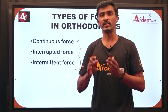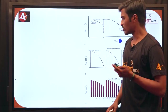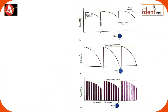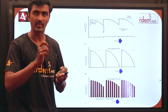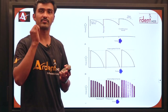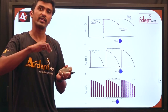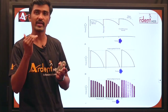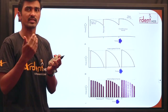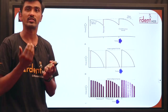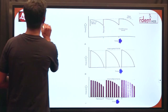What is a continuous force? When we activate an appliance, a fraction amount of the original force remains between appointment intervals. For example, in a case of midline diastema, the orthodontist fabricates a finger spring and activates it to 15 grams. The next appointment is after three to four weeks. When the patient returns, if around 3 to 4 grams of force is remaining, that is called continuous force. The keyword is the fraction of original force.